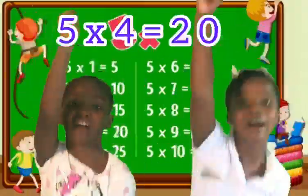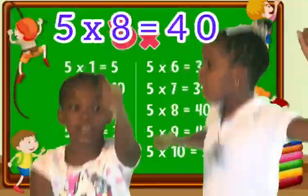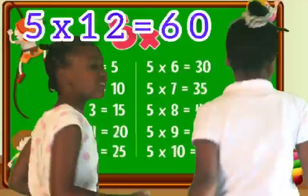Five times one, five. Times two, ten. Times four, twenty. Times six, thirty. Times seven, thirty-five. Times nine, forty-five. That's fifty-five.